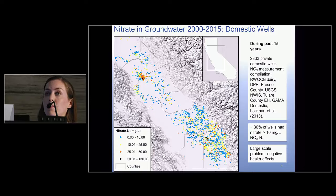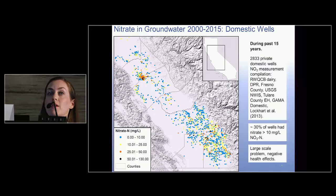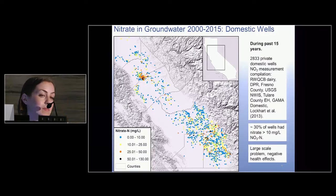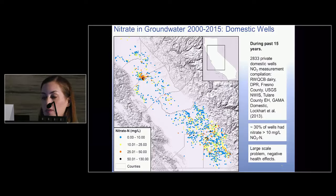There's quite a bit of finger-pointing that goes on here: what caused nitrate contamination in my well? Where is it coming from? Who should we be regulating?